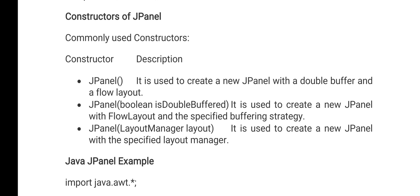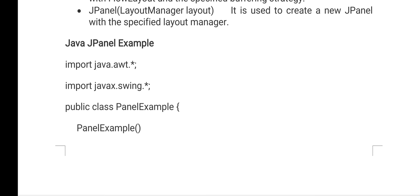To create a JPanel, there are constructors: JPanel() — the default constructor that creates only the panel; JPanel(boolean isDoubleBuffered) — creates a JPanel with flow layout where components are displayed in a row; and JPanel(LayoutManager layout) — where you can specify a layout.